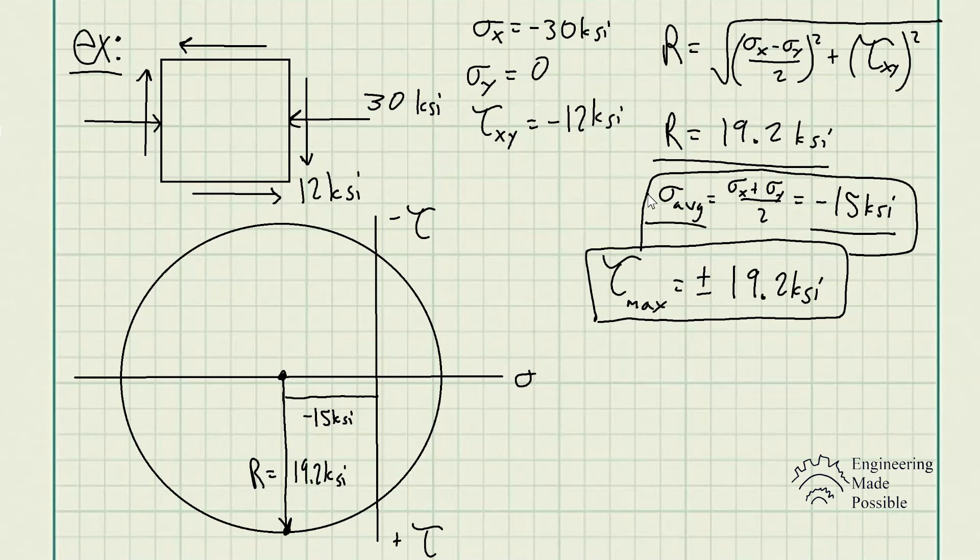How about the principal normal stresses? We have sigma 1 lying here, and we have sigma 2 over here. From the center of the circle to the first principal stress would be the radius. But to know what value sigma 1 is, we need to determine this length. So sigma 1 is obviously the radius plus the average stress.